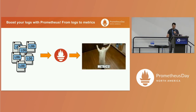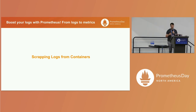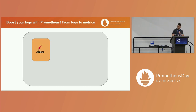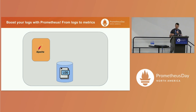To explain different ways to turn log traces into metrics, we need to split the talk into two contexts. The first one is scraping logs from containers, which is a simpler case. For example, we have an Apache application that writes its logs inside some volume, we share that volume with a specific application, and in this case we are going to explain the Grok exporter.